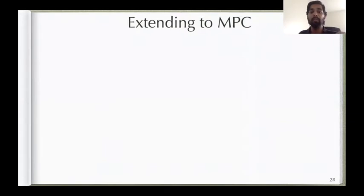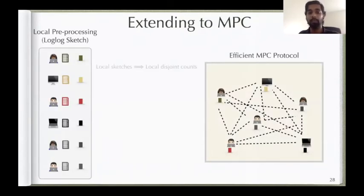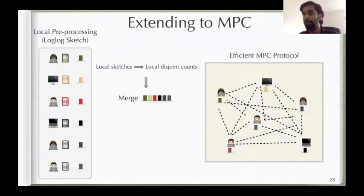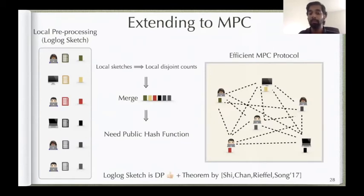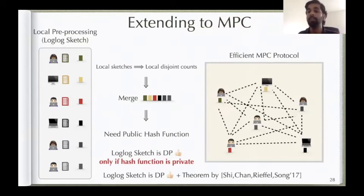The challenge is that local sketches give local disjoint counts, but we want the aggregate disjoint count — so we need to merge the sketches, which is why mergeability matters. To merge sketches across parties, we need to use a public hash function. But we showed LogLogSketch is differentially private only if the hash function is private. So we have a conflict: we need a public hash function for merging, but privacy requires a private hash.